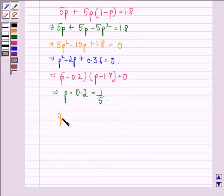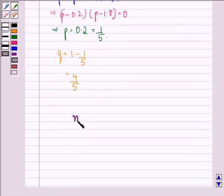Q will be equal to 1 minus 1 by 5, that is 4 by 5. So our answer to this question is N is equal to 5, P is equal to 1 by 5, and Q is equal to 4 by 5.